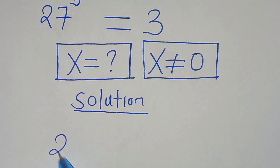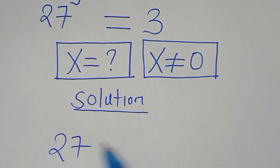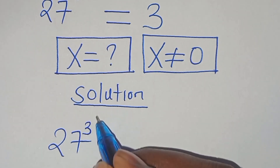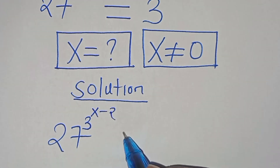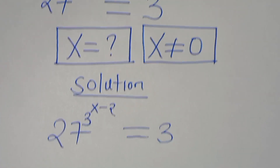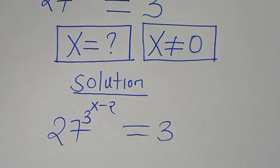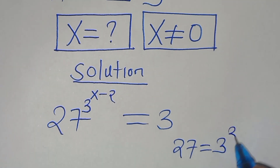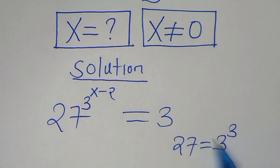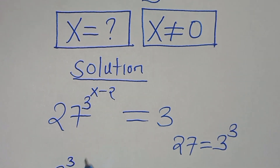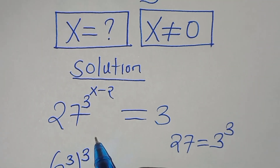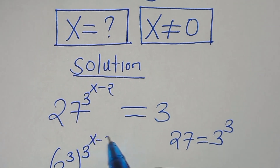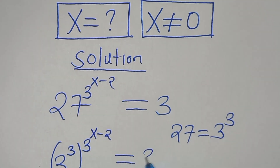The problem is 27 raised to the power of 3 raised to the power of x minus 2, equals 3. We can express 27 as 3 to the power of 3. Substituting this, we have 3 to the power of 3, raised to the power of 3 raised to the power of x minus 2, equals 3.